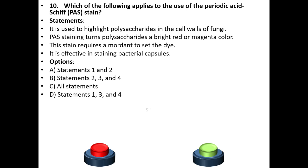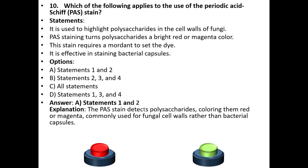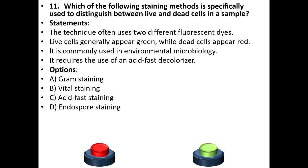The correct answer is option A: statements 1 and 2. Explanation: The PAS stain detects polysaccharides, coloring them red or magenta, and is commonly used for fungal cell walls rather than bacterial capsules.